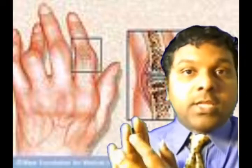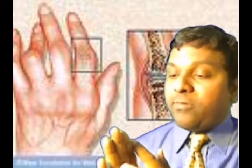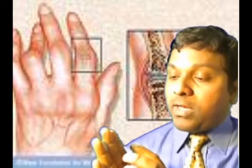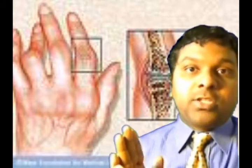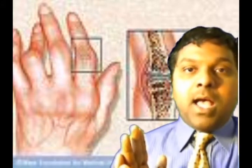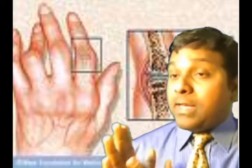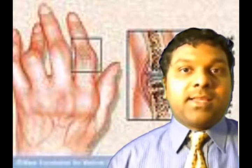Osteoarthritis spares the wrist joint and the metacarpophalangeal joints. It involves the distal interphalangeal joints. And importantly, it does not have morning stiffness.